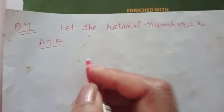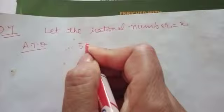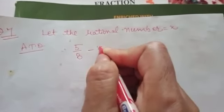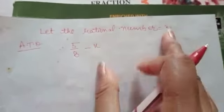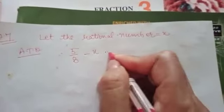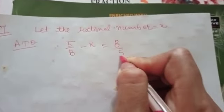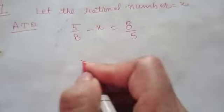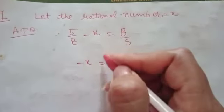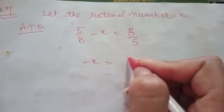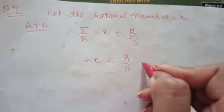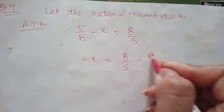According to the question, what should be subtracted from 5 over 8? We subtract x — the number we let — to get 8 over 5. Now we will find the value of x. Minus x as it is, 8 over 5 as it is, take this number to the other side — it will be minus 5 over 8.